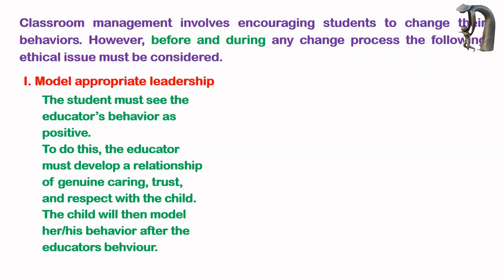Whatever activity you select for preparing the educational intervention, make sure it reflects appropriate leadership. Model the particular objective in such a way that the child can learn from what you do. The teacher must help pull students to reach the social level or the objective. That is the first ethical issue: appropriate leadership.